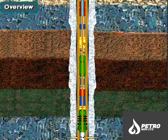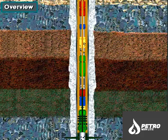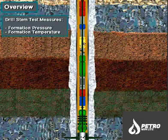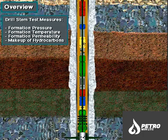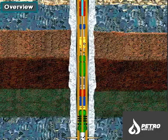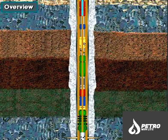In addition to logs, the well operator will sometimes order a drill stem test. The drill stem test, or DST, temporarily produces hydrocarbons through the rig's drill string, or stem. DSTs also measure and record formation pressure and temperature data. To determine formation permeability and the makeup of hydrocarbons, the well owner may run a DST tool. Like well logging, DSTs help well owners decide whether to run casing and complete a well.